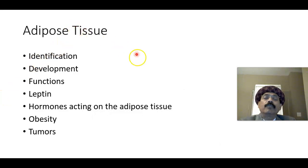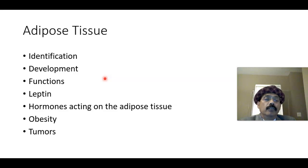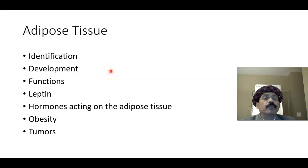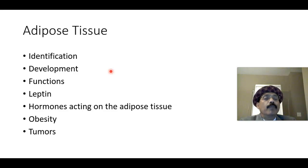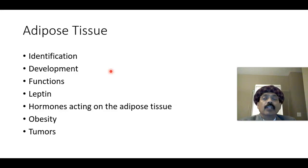For identification: the white adipocyte is a large cell with a very large single locule of fat, with the nucleus at the extreme periphery. The cytoplasm is very thin and close to the cell membrane at the periphery.